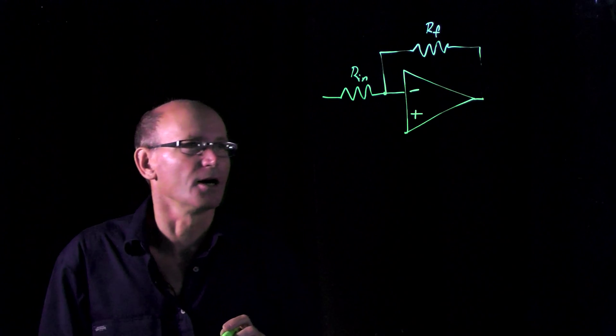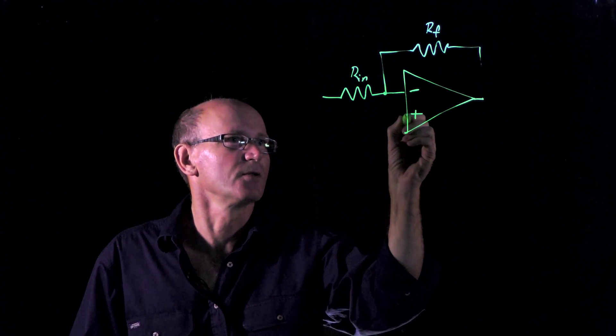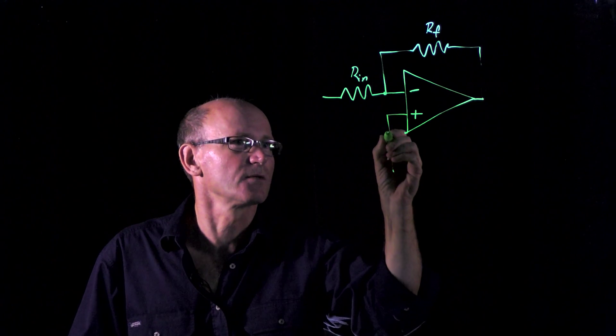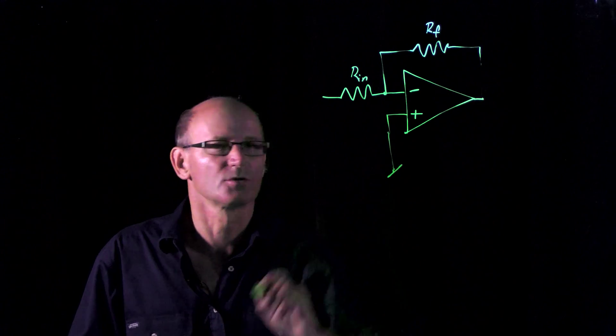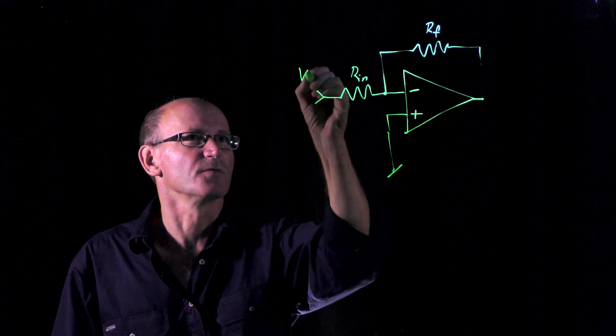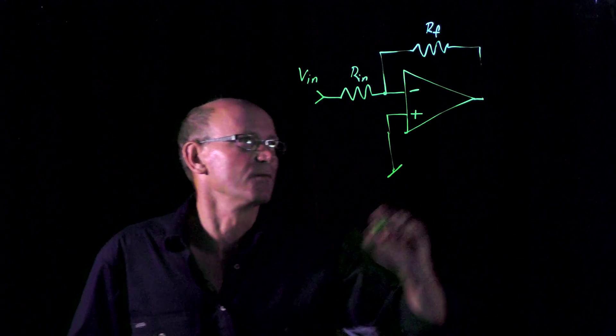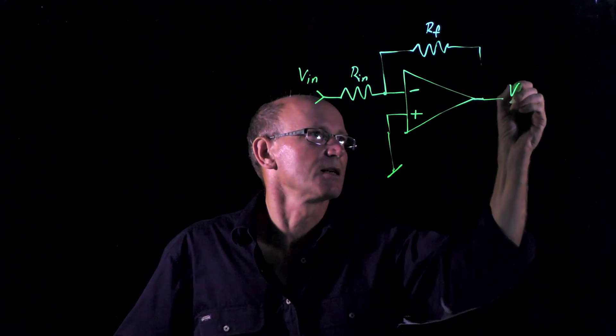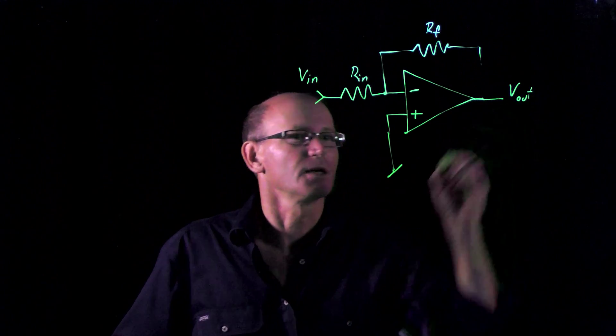Let's call that RF. Our non-inverting input is conventionally connected to ground potential. Our amplifier now gives us voltage amplification of V in and presents that at the output terminal as V out.